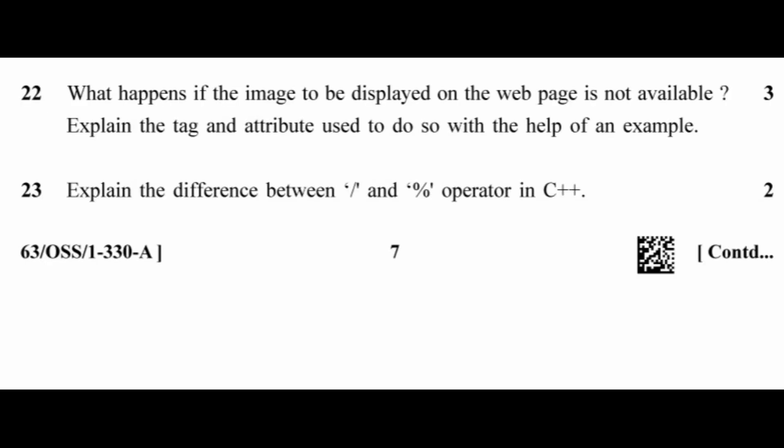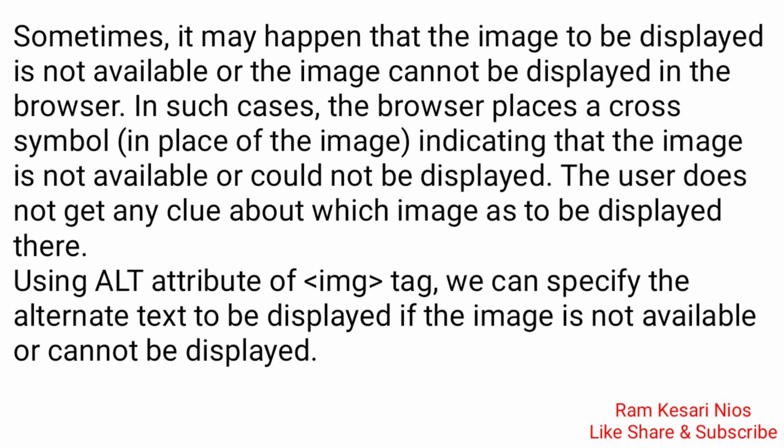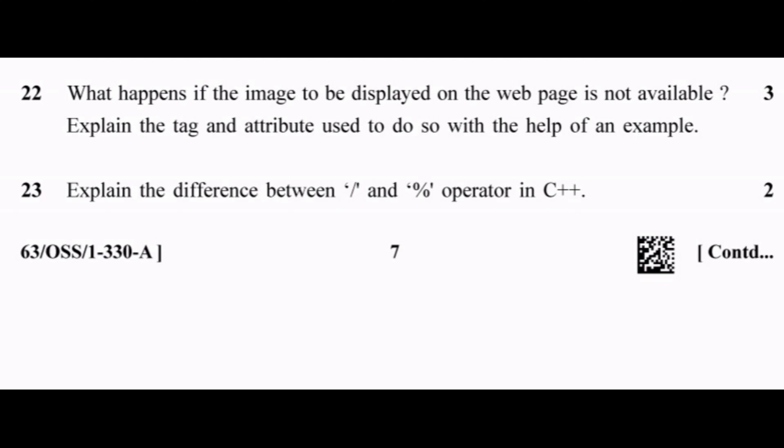Question 22: What happens if the image to be displayed on a web page is not available? Explain the tag and attribute used with an example. Sometimes the image may not be available or cannot be displayed in the browser; in such cases the browser places a cross symbol indicating the image is not available. The user does not get any clue about which image was to be displayed. Using the alt attribute of the image tag, we can specify alternate text to be displayed if the image is not available.